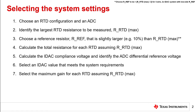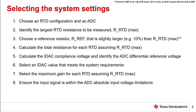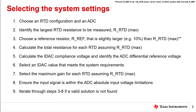Seventh, select a gain value for each RTD, assuming the maximum resistance to be measured is RRTD Max. Eighth, ensure that the input signal is within the ADC absolute input voltage limitations. These limits are set by the integrated gain amplifier to maintain linear operation. Finally, iteration might be necessary if the previous steps did not yield a valid result. Loop back through steps three through eight if a viable solution is not found. Since this is a fairly complex process, the rest of this presentation steps through a design example to make the goal of each step more clear.